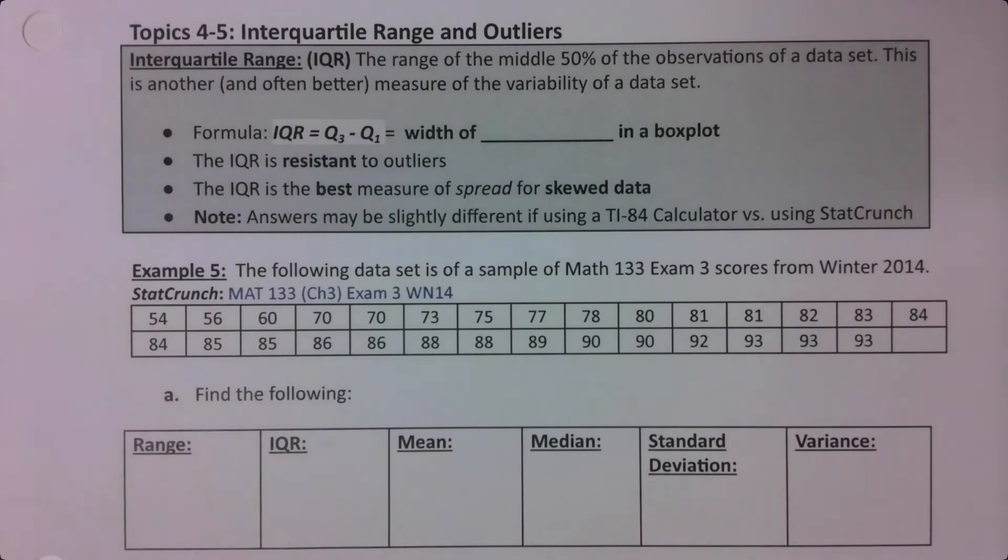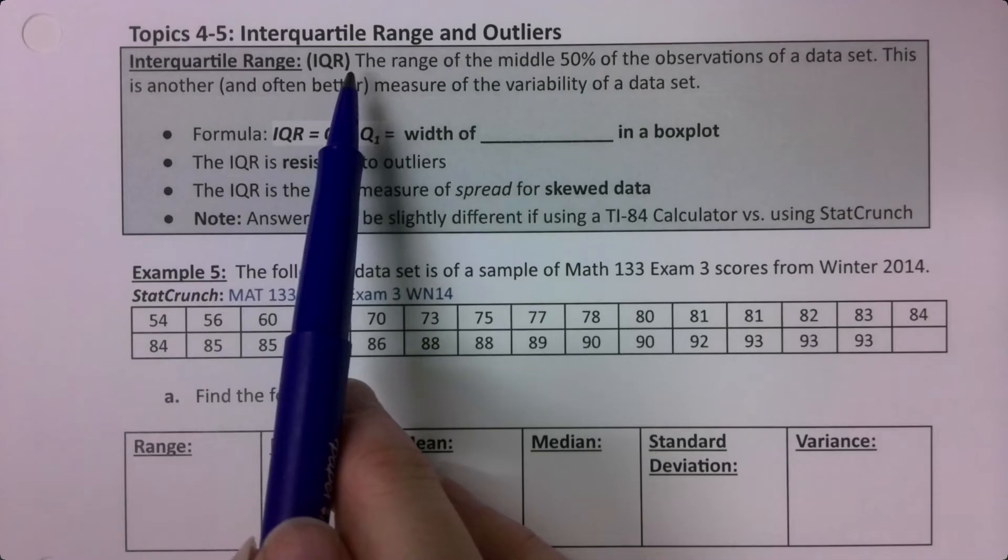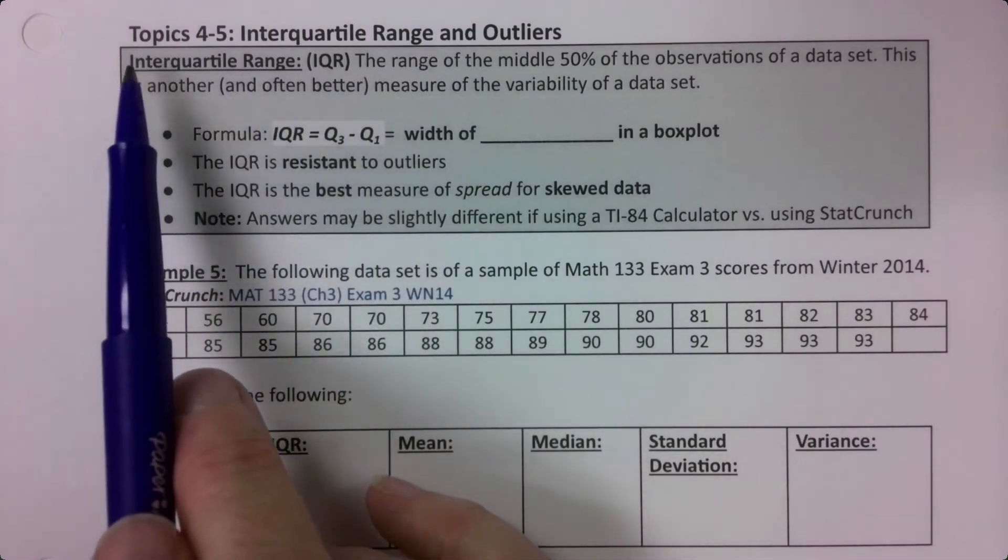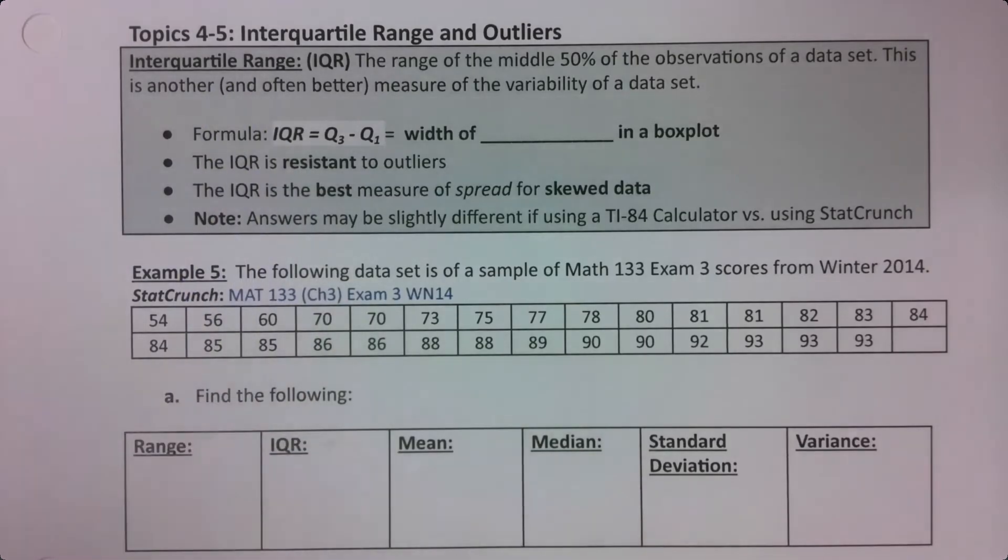So now we want to take the quartiles that we've just learned about and create a couple more definitions. The first thing we want to talk about is the interquartile range, which I will almost always refer to as the IQR. IQ, interquartile, R stands for range. It's the range of the middle 50% of the observations of a data set. In other words, it's all the values from Q1 to Q3, and it's a measure of the variability, the dispersion, the spread.